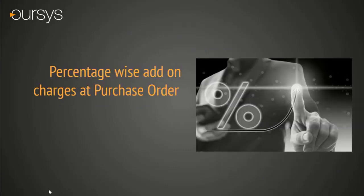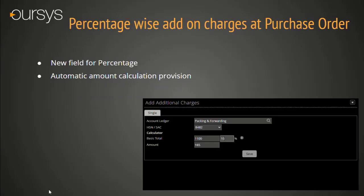Percentage-wise Add-on Charges at Purchase Order level. Here also, we have introduced a new field for percentage. No need to do manual calculation — just enter the percentage in the field and system will automatically calculate the amount. For reference, we also show the base total of the purchase order.